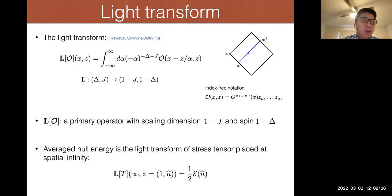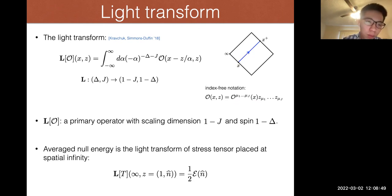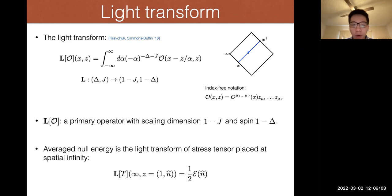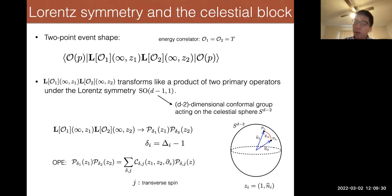To do that I need better notation for energy detectors, specifically the light transform. I'm using index-free notation, contracting all indices of an operator with a polarization vector z. The light transform is just integrating the operator along a null direction given by this polarization vector z. The light transform L of O is a primary operator with scaling dimension 1 minus j and spin 1 minus delta. The average null energy operator, or energy detector, is actually just the light transform of the stress tensor. Each energy detector lives at a point on the celestial sphere, with position given by this polarization vector z, which can be thought of as an embedding space coordinate on the d minus two sphere.